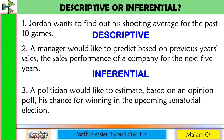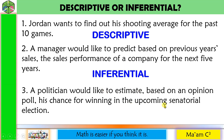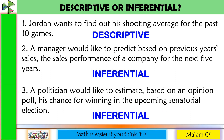Number three — a politician would like to estimate, based on an opinion poll, his chance of winning in the upcoming senatorial election. Here we have two key words: 'estimate' and 'upcoming.' Both pertain to something in the future — making predictions. This is inferential statistics.